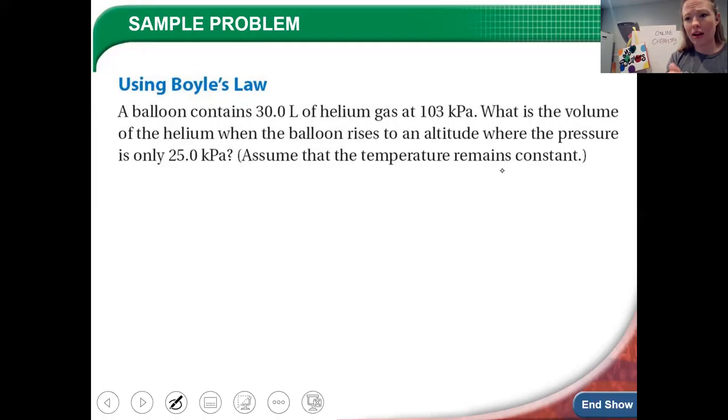So it starts at this pressure. And then it goes up to a pressure less than that of Mount Everest. So its pressure is even less than Mount Everest. It's even higher in the atmosphere. So let's identify our variables.